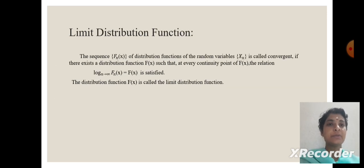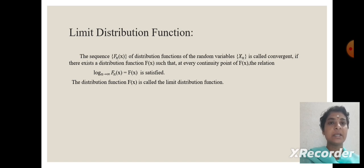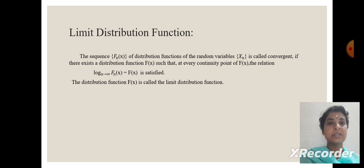Limit distribution function: the sequence f of x of distribution functions of the random variable x of n is called convergent if there exists a distribution function f of x such that at every continuity point of f of x, the relation limit n tends to infinity of f sub n of x equal to f of x is satisfied. The distribution function f of x is called the limit distribution function.